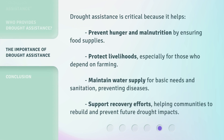Drought assistance is critical because it helps prevent hunger and malnutrition by ensuring food supplies; protect livelihoods, especially for those who depend on farming; maintain water supply for basic needs and sanitation, preventing diseases; and support recovery efforts, helping communities to rebuild and prevent future drought impacts.